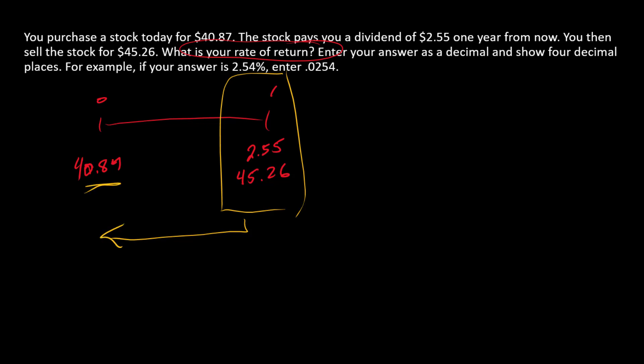So if you think about a standard present value formula, it would look like this. There is P₀, there is D₁, and there is P₁.